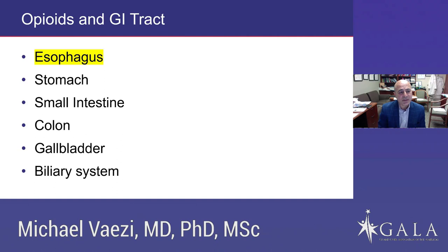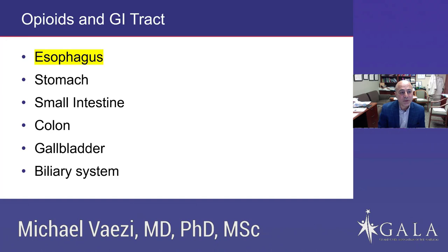Opioids impact the GI tract as a whole. They impact the colon — slowing down colonic motility and leading to constipation. Opioids also impact the stomach, slowing down gastric motility. Many patients have nausea and vomiting because of this. In the stomach, opioids impact the pylorus by increasing its pressure, making it hypertonic so it can't empty. In the small intestine, opioids slow down propagation but also increase contraction, reducing peristalsis. Overall, the impact of opioids in the GI tract is large.